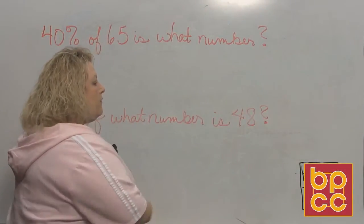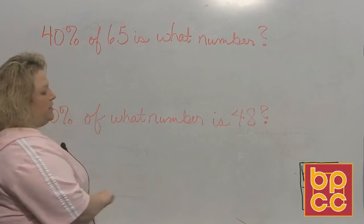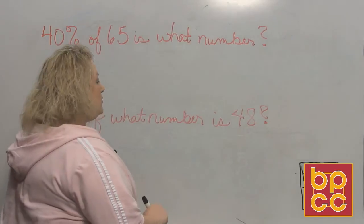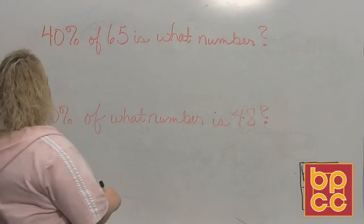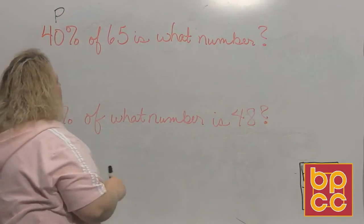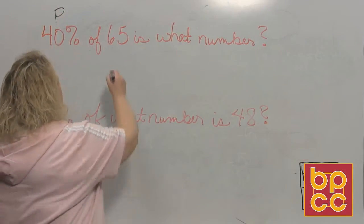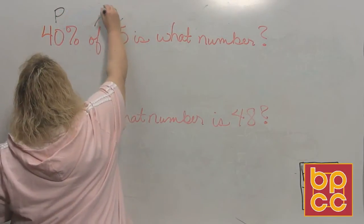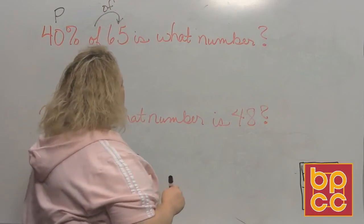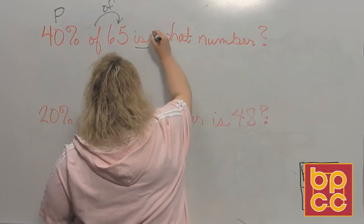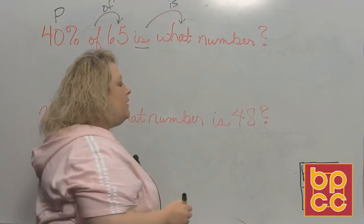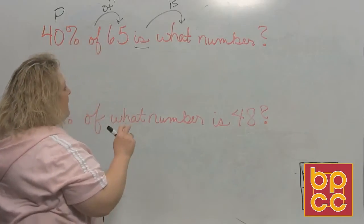It says 40% of 65 is what number? The first thing we want to do is identify the parts. We have 40%, that's P, that's our percent. We have 'of' 65, that's our whole amount. And then it says 'is what number?' So what I'm looking for is my amount or my 'is'.